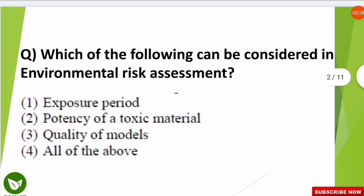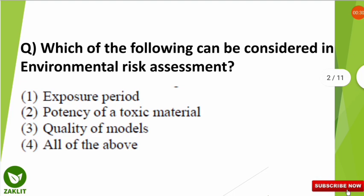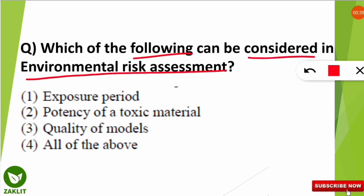Let's start with the first question. Please note down all these things because it will be very important for examination purposes. The first question is: which of the following can be considered in the environmental risk assessment? Read all the options carefully. The correct option is option number four — all of the above are considered in the environmental risk assessment.